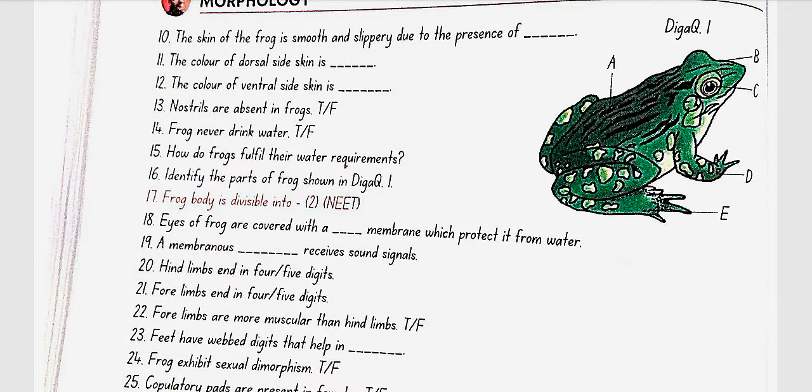Frog body is divisible into head and trunk. Eyes of frog are covered with nictitating membrane which protect it from water. A membrane is tympanum receives sound signals. Hind limbs end in five digits. Forelimbs end in four digits.